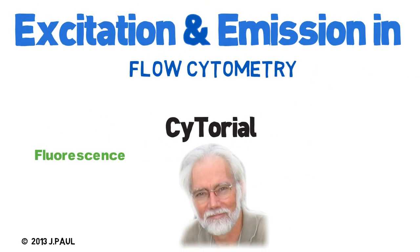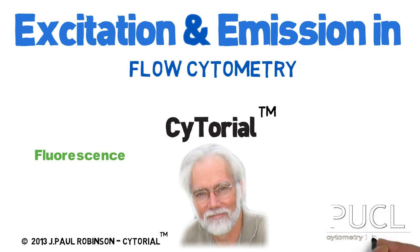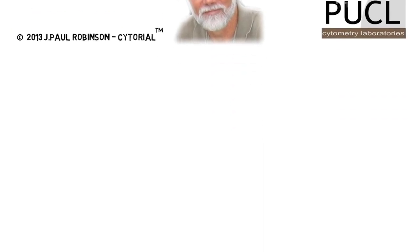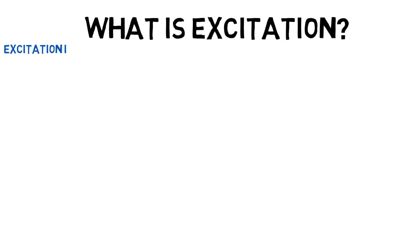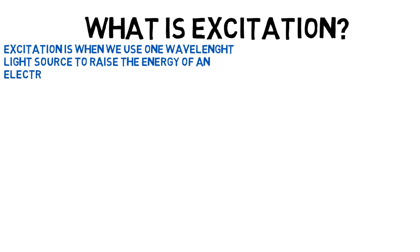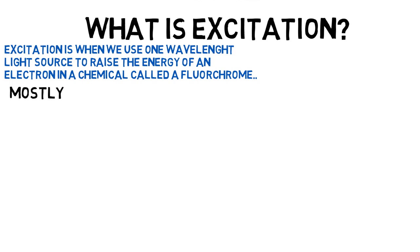Understanding how fluorescence works is a critical aspect of understanding flow cytometry. This tutorial will try to give you the fundamentals of fluorescence and the difference between excitation and emission. So what is excitation? You get excitation when you use a particular wavelength light source to raise the energy of an electron in a molecule called a fluorochrome or a chromophore.